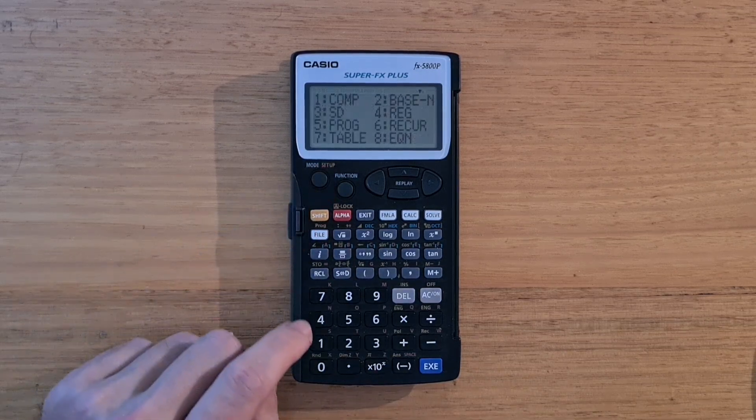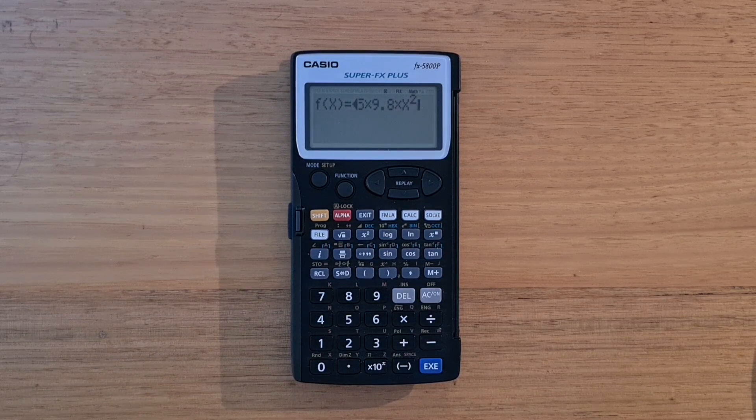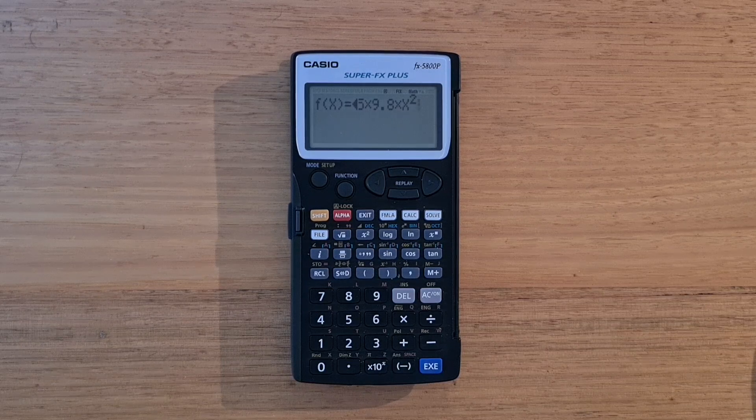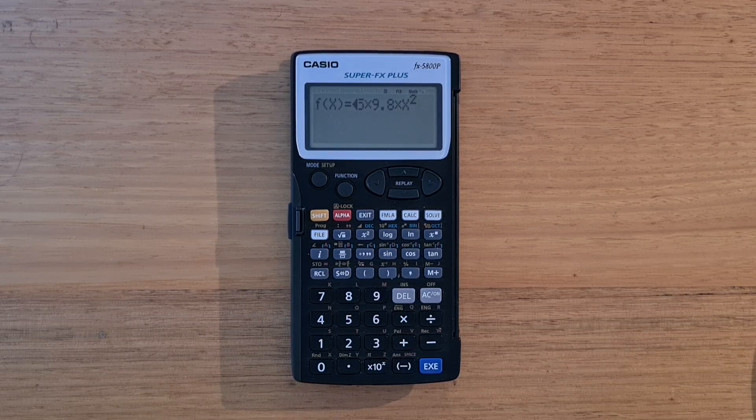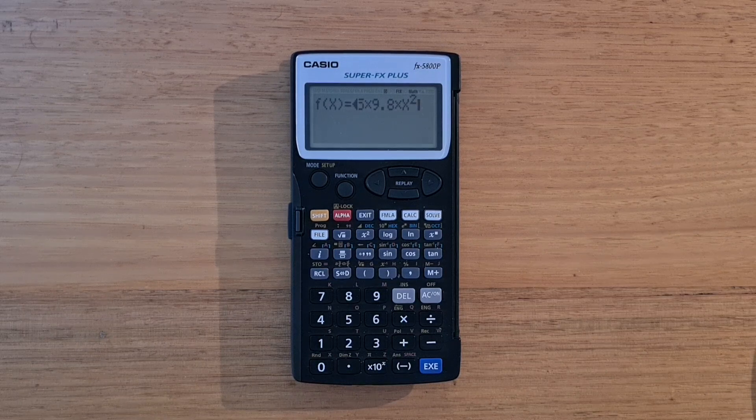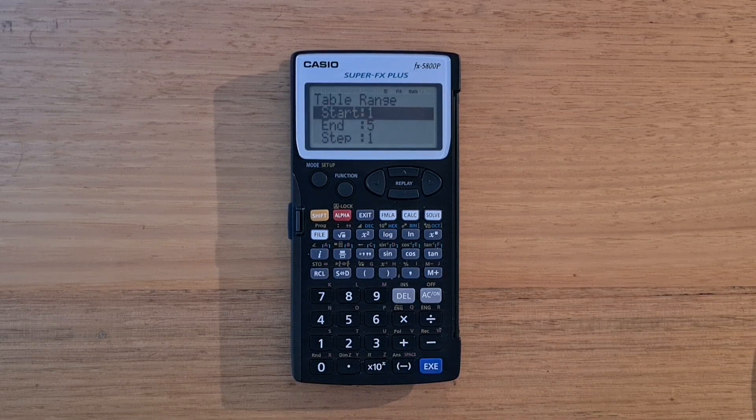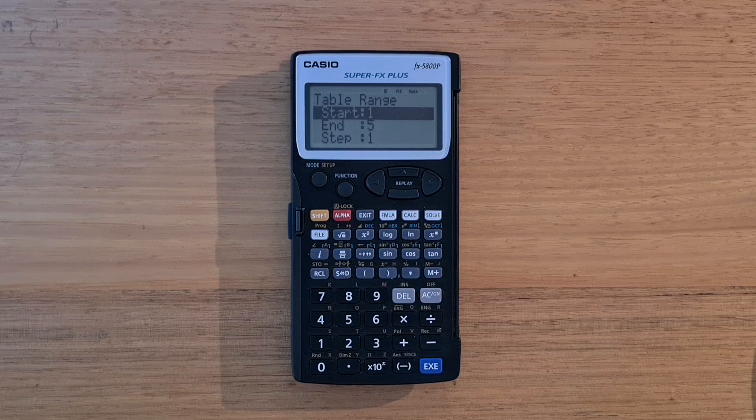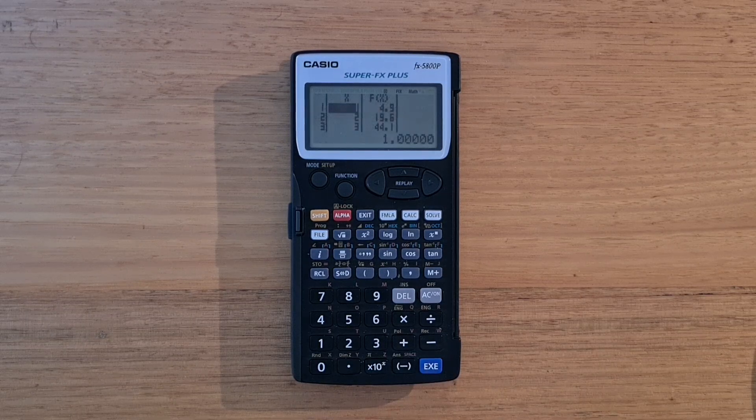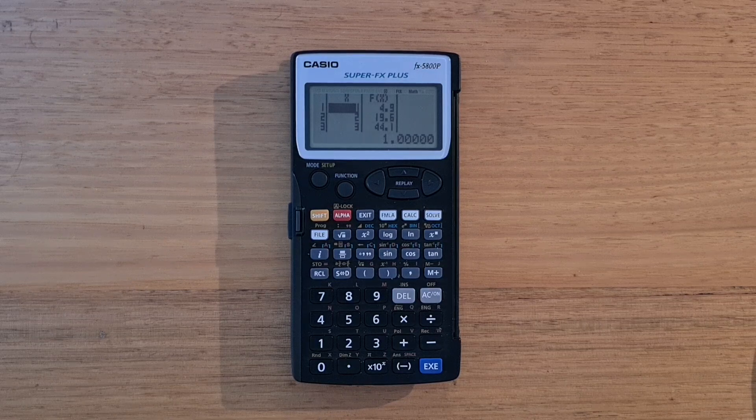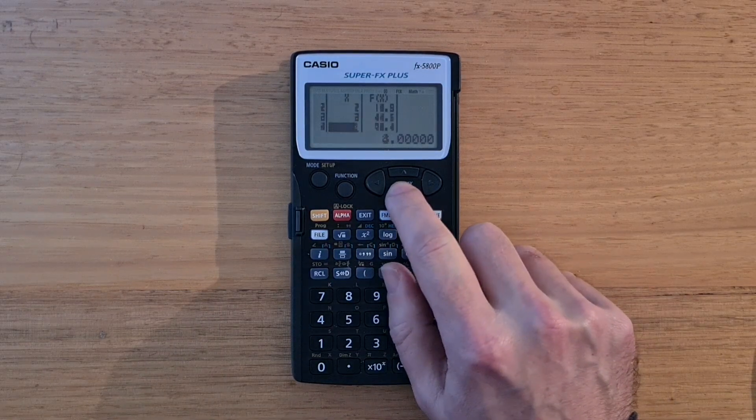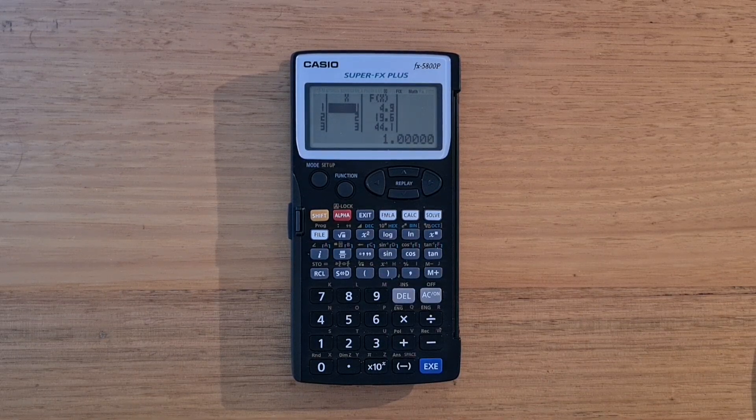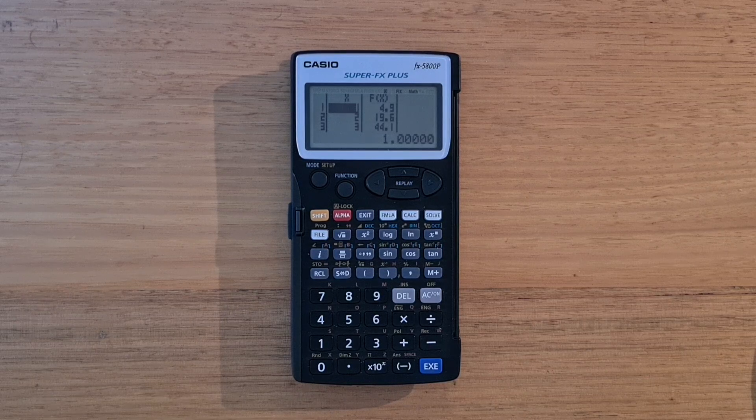So if we select table mode 7, we can enter a formula. And here we have the free fall distance equation that calculates the distance an object falls under gravity in a number of seconds. And so after we've entered that, we can enter the start and end of the range of the table and also the step size. And after the 5800P creates a table of the results over that range. And it's a great use of the extra screen real estate on the calculator and it can be a handy feature.